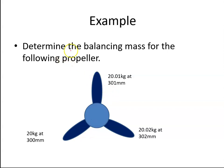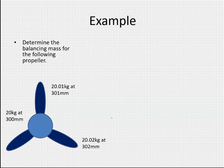In this example we're asked to determine the balancing mass for the following propeller. We have three blades with a slight difference in the mass of each blade and a slight difference in the center of gravity for each blade. If I want to do this as a sketch...